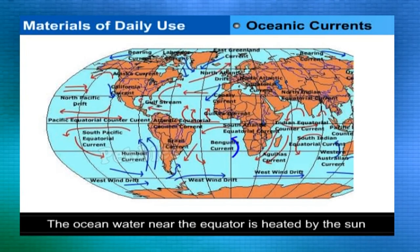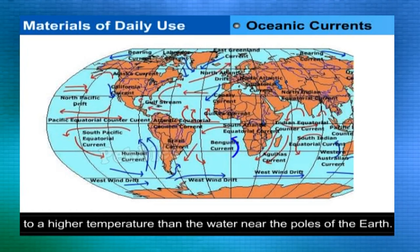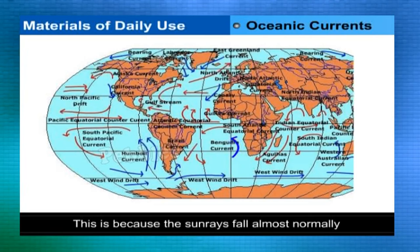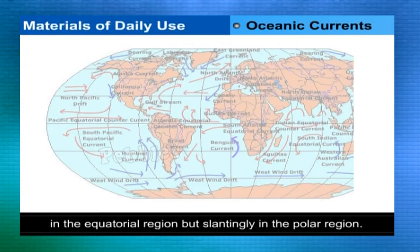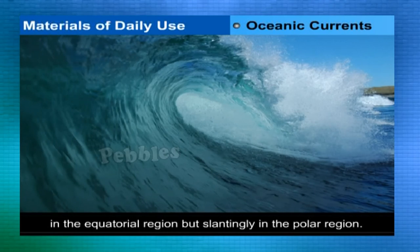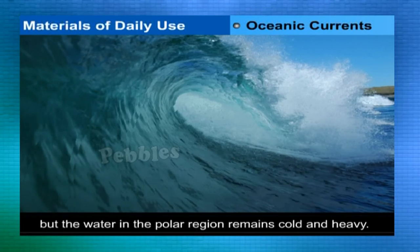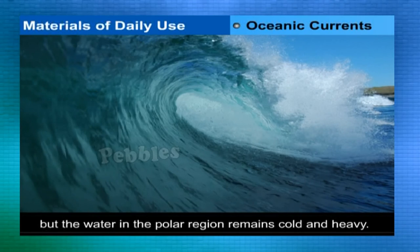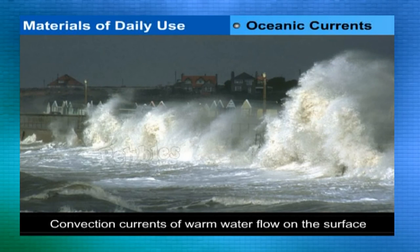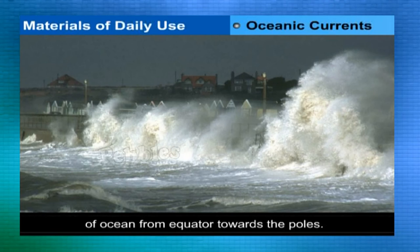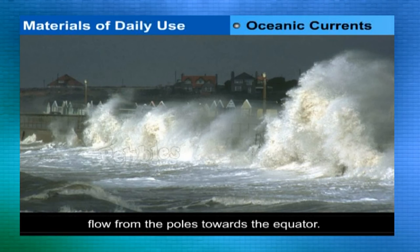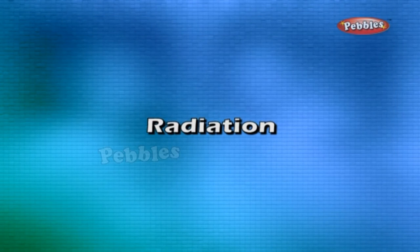Oceanic currents: ocean water near the equator is heated to a much higher temperature than near the poles, because the sun's rays fall almost normally at the equator but slantingly at the poles. Warm equatorial water expands and becomes lighter; cold polar water is heavy. Convection currents of warm water flow on the ocean surface from the equator toward the poles, while cold water flows from the poles toward the equator. These currents control ocean temperature and are called oceanic currents.